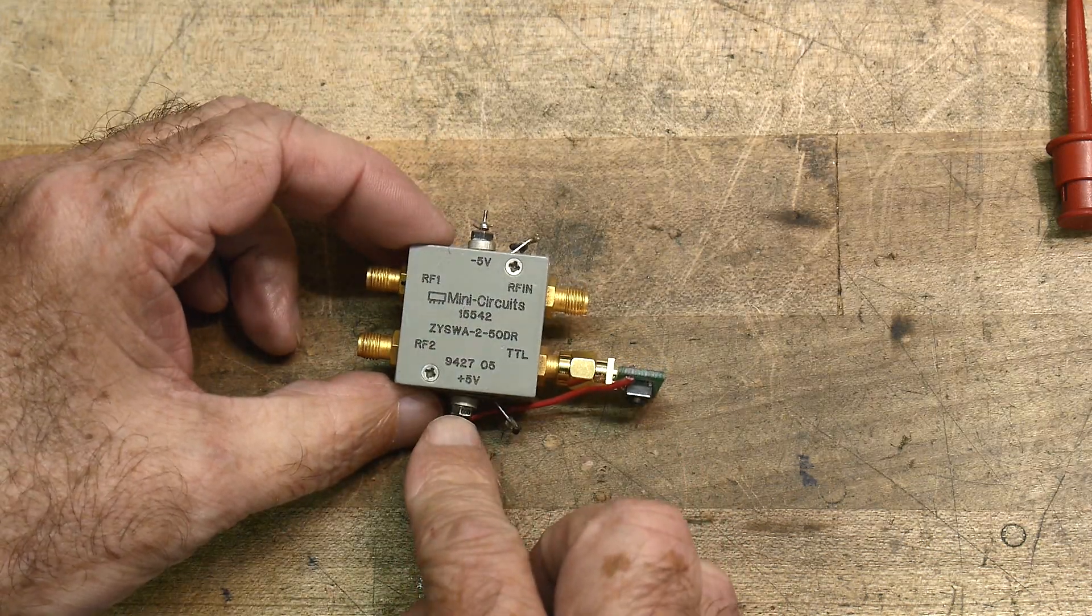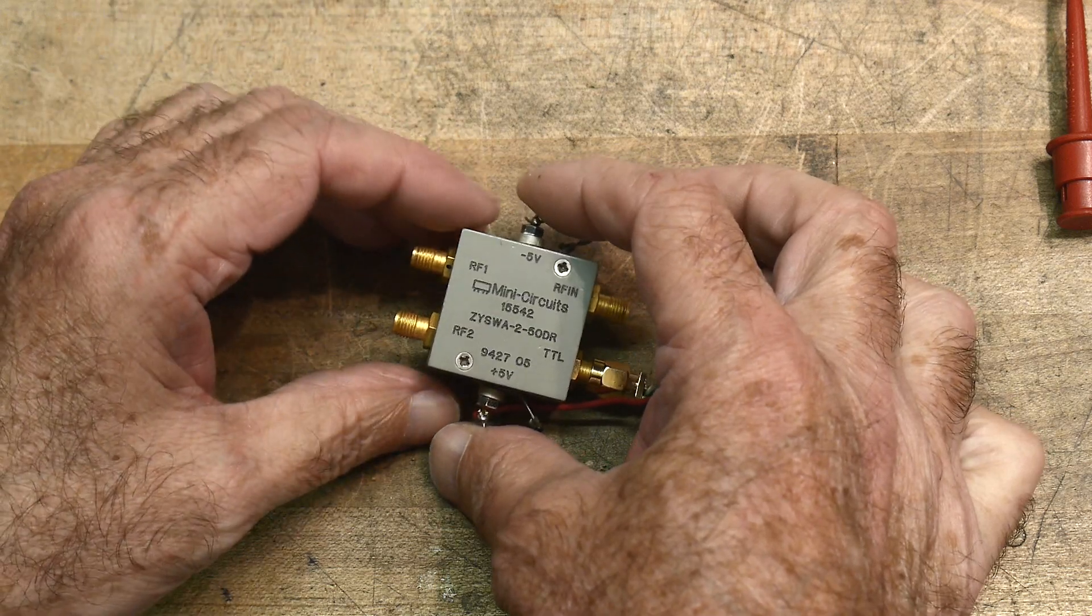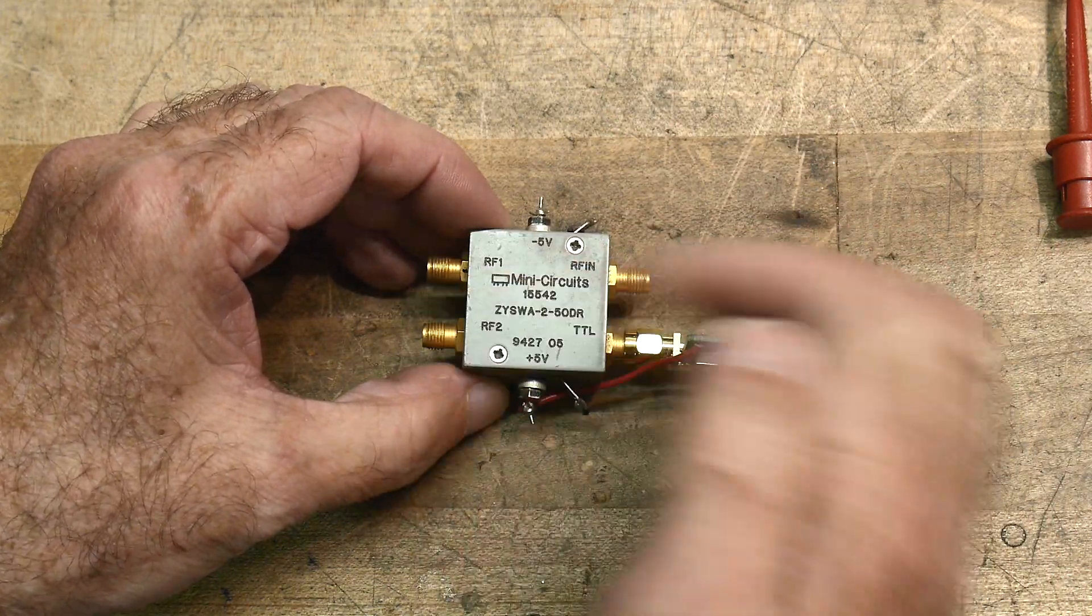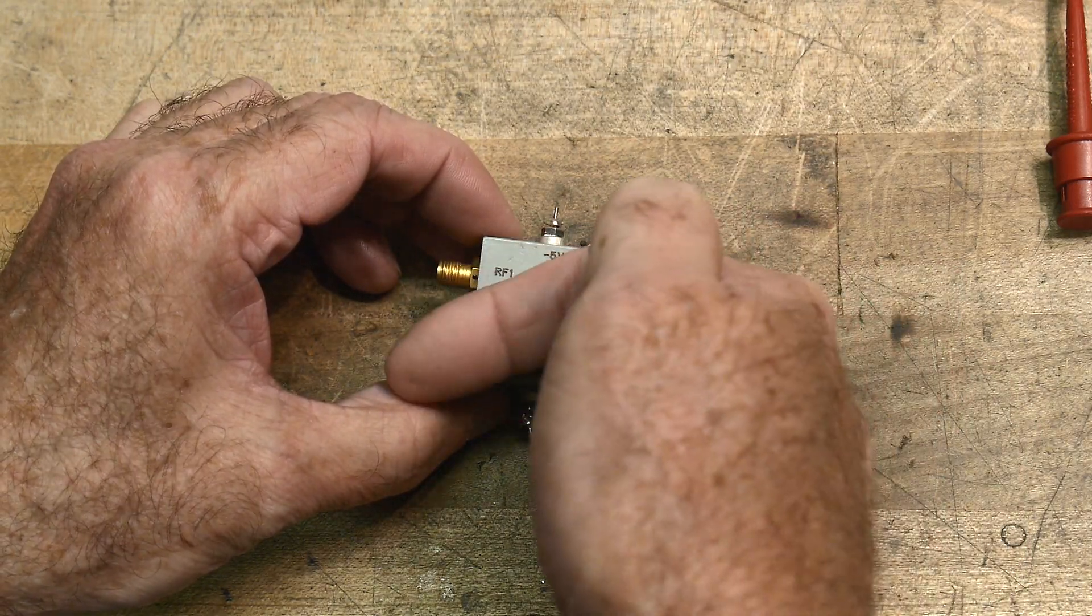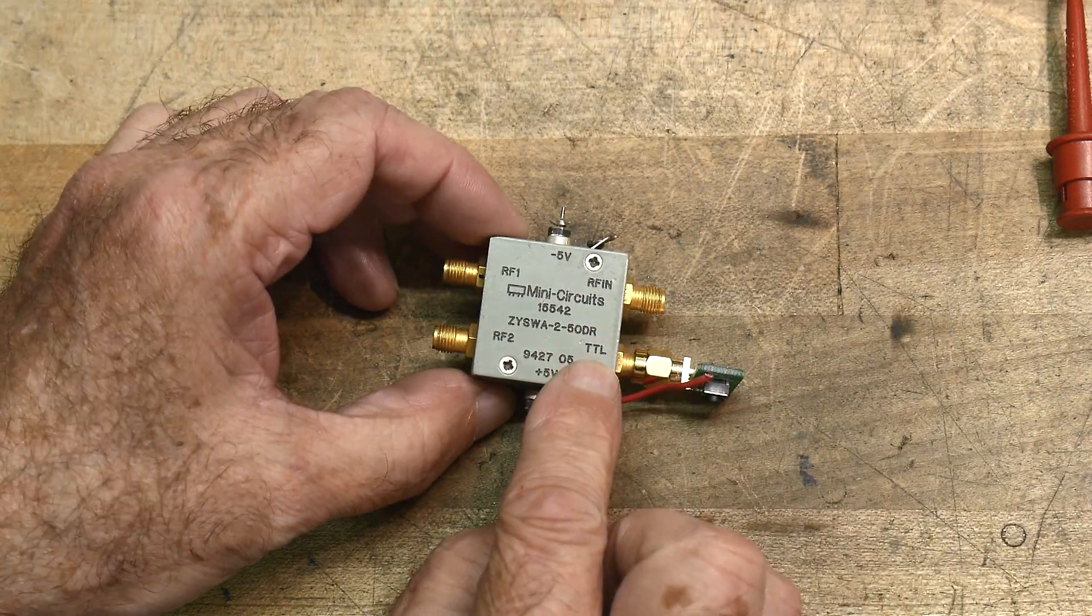It requires plus 5 volts and minus 5 volts, so you think maybe it's an amplifier or something. There's an RF in and then an RF1, RF2 out. It's a switch, so you can send things in and switch it between two things.